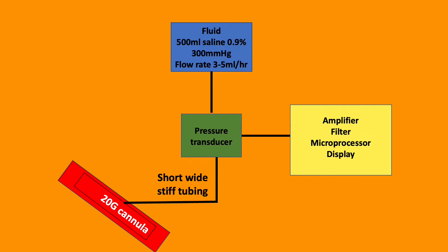There are five main components of an intra-arterial line system. First, the cannula, usually 20 gauge. This is connected to a pressure transducer by a short, wide, stiff, non-compliant tube. The pressure transducer converts a pressure signal into an electrical signal. The arterial pressure is transmitted by a columnar fluid to a flexible diaphragm within the transducer, displacing it. The diaphragm is attached to a wire strain gauge incorporated into a Wheatstone bridge circuit, so that movement of the diaphragm stretches or compresses the gauges, altering resistance. The signal is then passed through cables and microprocessors, amplified and analysed, and expressed on a display.